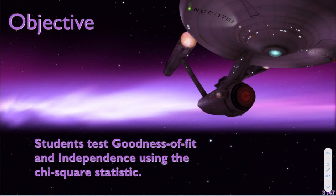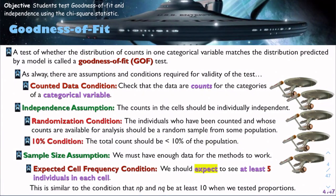The first thing that we just mentioned is we want to look at goodness of fit tests. We will also be testing for independence and homogeneity by using this new statistic that we have called the chi-square statistic. With the goodness of fit test, we're looking for a test to see whether the distribution of counts in one categorical variable matches the distribution predicted by a model, and we call that the goodness of fit test.